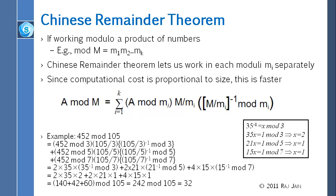M divided by 3 is 35. So we want to find out 35 inverse mod 3. So this is: 35 times x is congruent to 1 mod 3. What value of x will give you 1 mod 3? If you put x equal to 1, then 35 mod 3 gives you 2, so that is not 1. If you put x equal to 2, then 70 mod 3 is 1. So x equal to 2 is the answer.